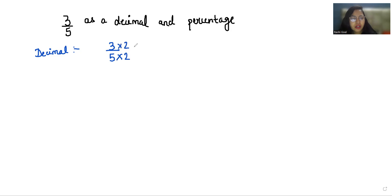Multiply 2 in both numerator and denominator so it becomes 6 by 10. Now to convert to decimal, I place the decimal according to the number of zeros in the denominator. There is one zero in denominator, so I put the decimal before one place. Since there's no digit, I write zero. So 3 by 5 as a decimal is 0.6.